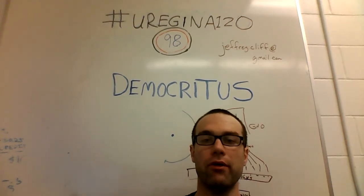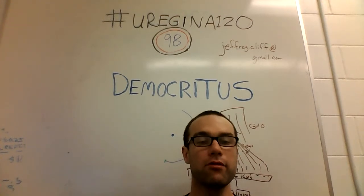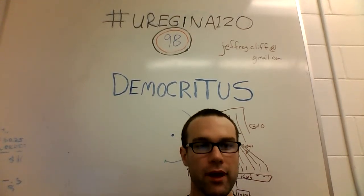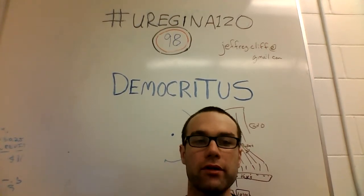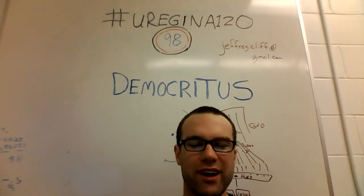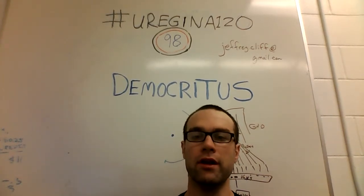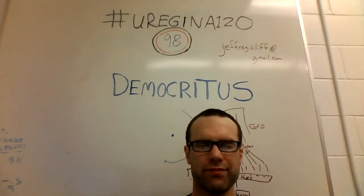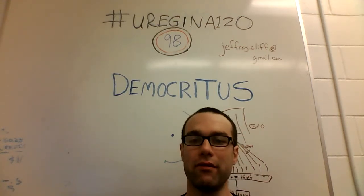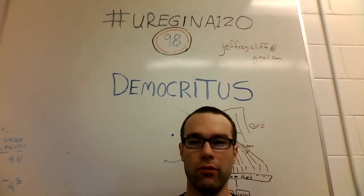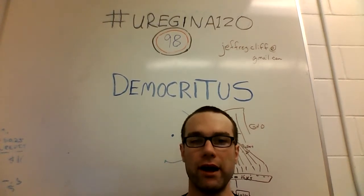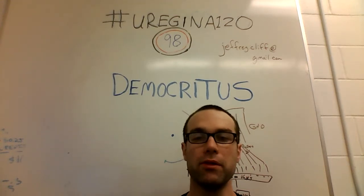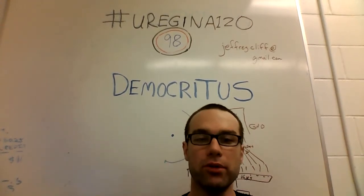Before we get deeper into how Democritus would have seen this, it's also worth pointing out that it's hard to disambiguate what were Democritus' ideas and what were the ideas of his mentor, Leucippus. Leucippus wrote a book called The Greater World System, which follows along the path of Isaac Newton's system of the world. Democritus himself wrote a companion book called The Little World System.